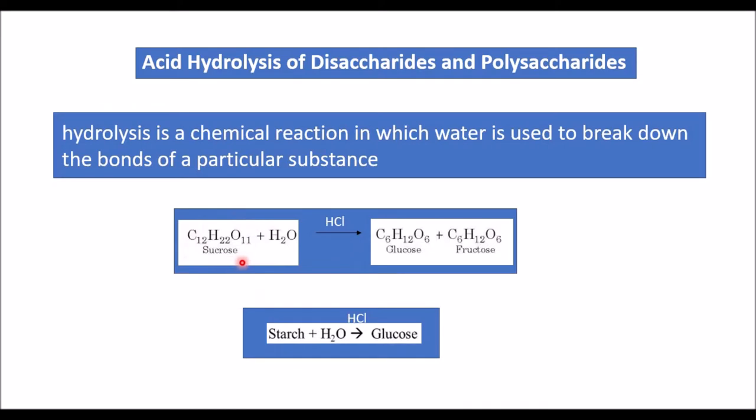Sucrose is a disaccharide which is made up of glucose and fructose. Acid hydrolysis of sucrose produces glucose and fructose.